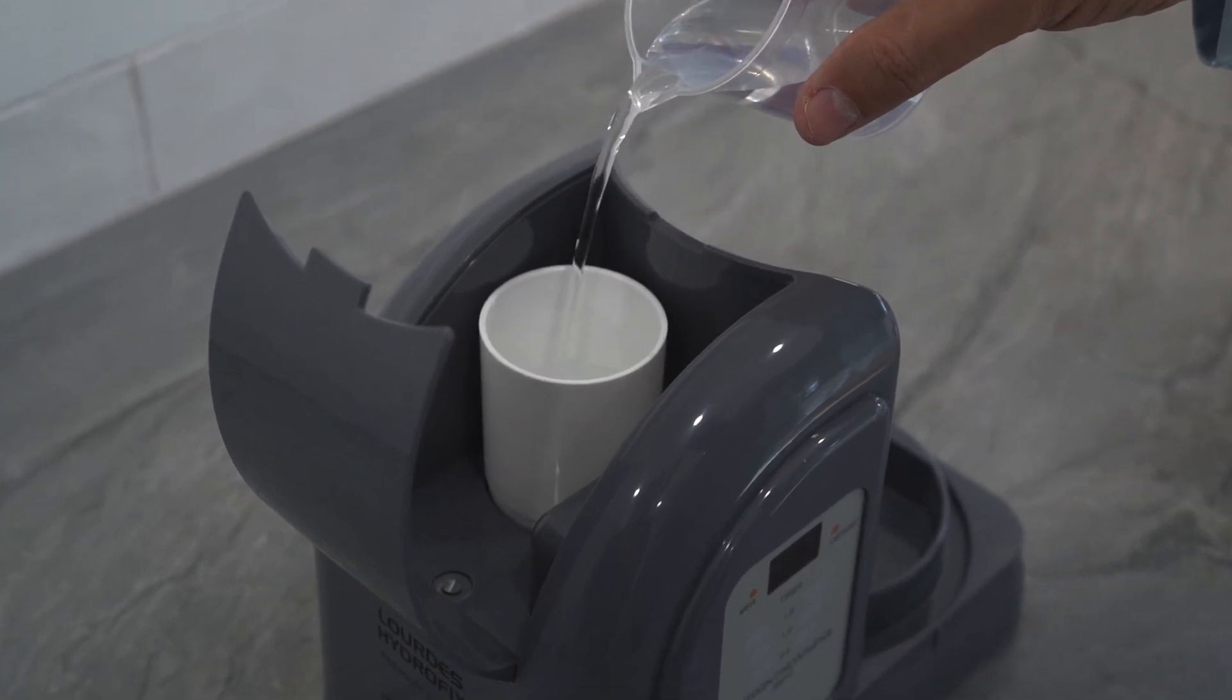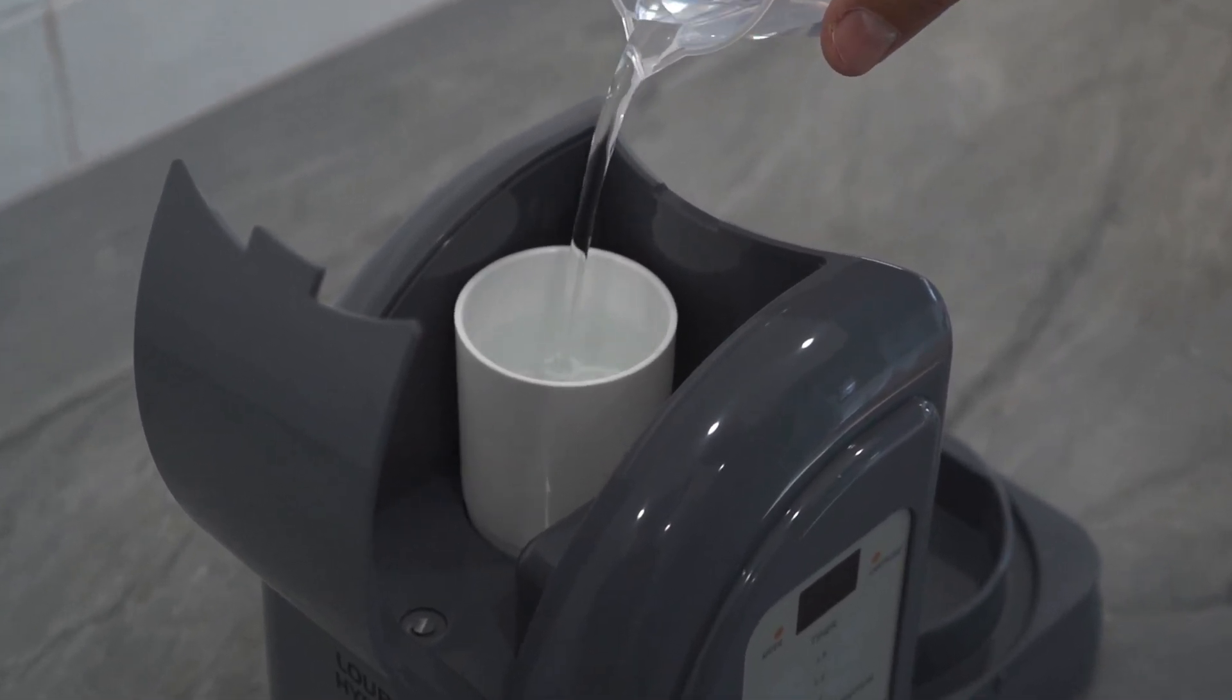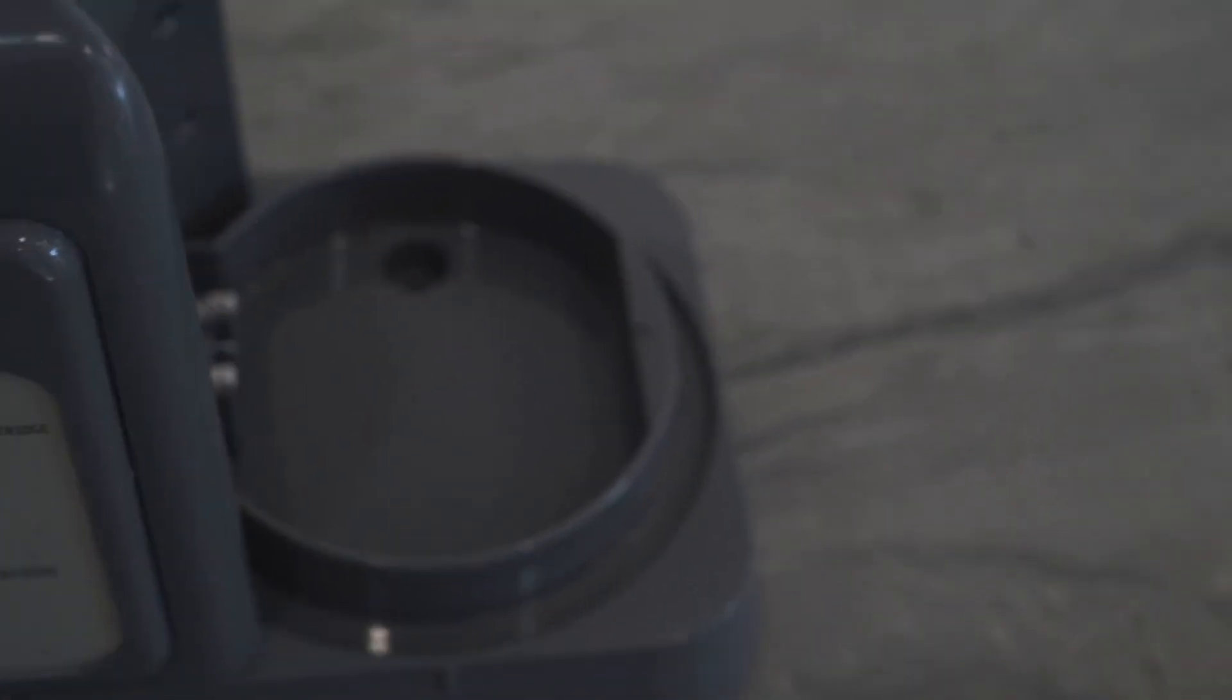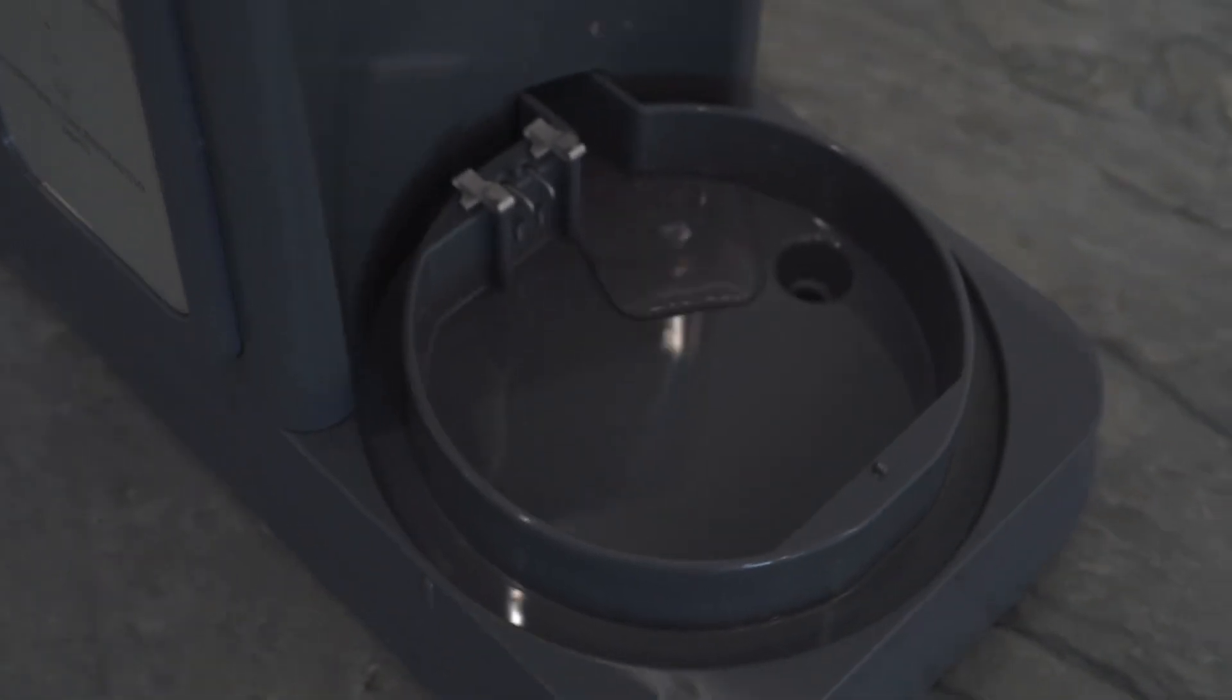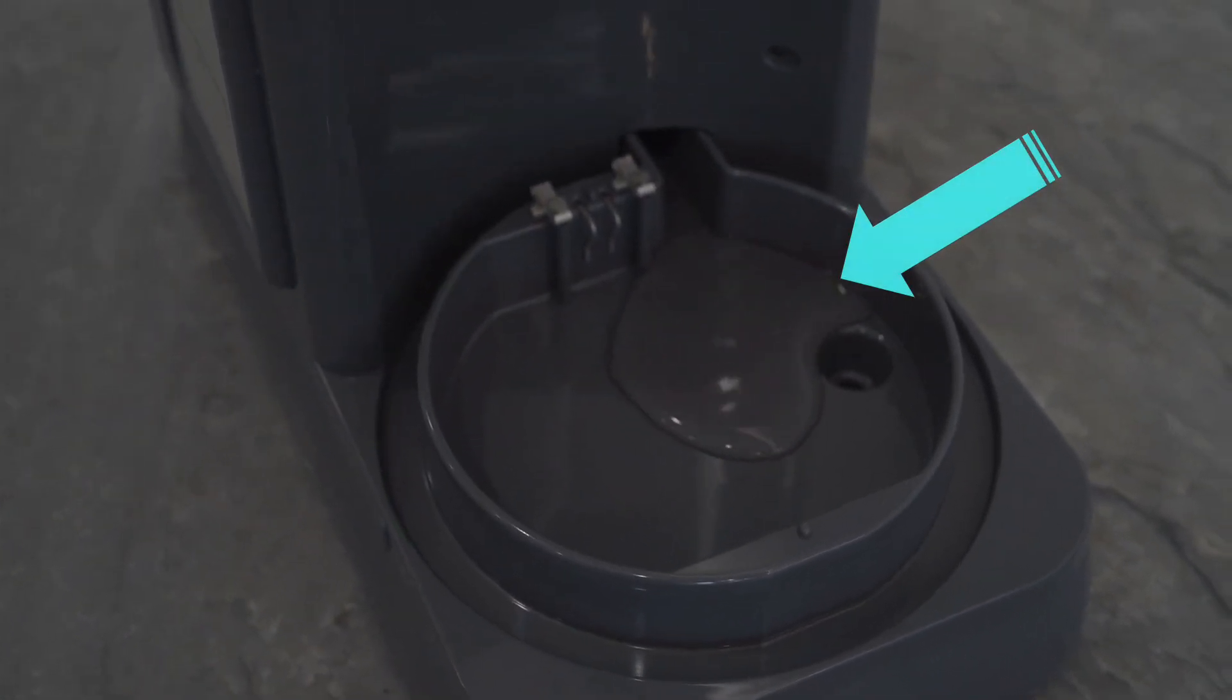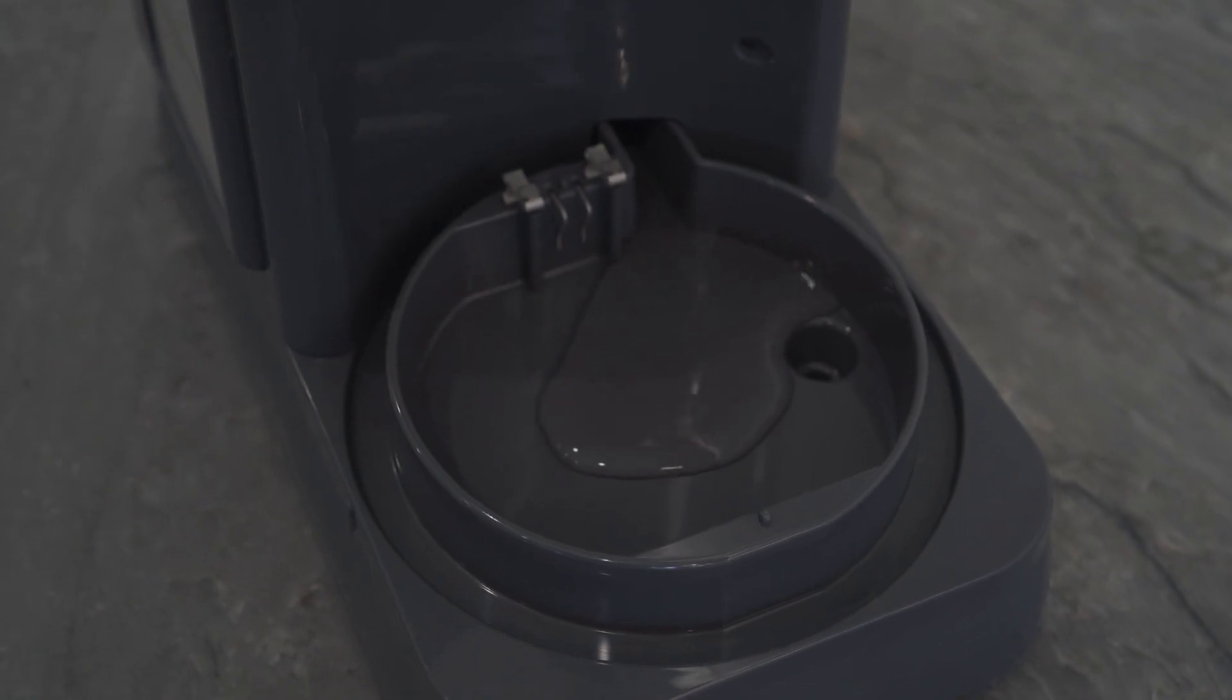Try to keep the base unit dry by using a funnel if needed. If any water spills on the base unit, promptly wipe it off. Do not overfill the cartridge and do not add water directly to the pitcher tray. The water you add to the cartridge will run through the cartridge and fill the pitcher tray in a few seconds.